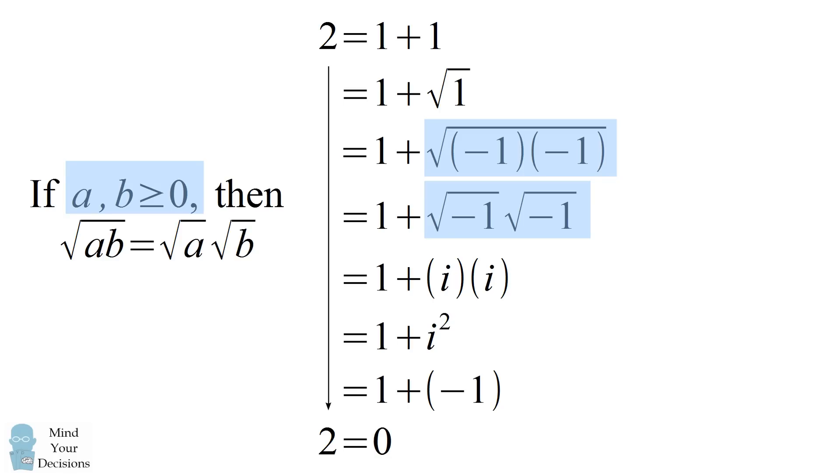So in math class, you sometimes learn these properties and they come with these conditions like, this is only true if both terms are greater than or equal to 0. You can see why these terms absolutely matter. You should remember the conditions of these properties because otherwise you can get to absurd conclusions like, in this case, 2 equals 0.